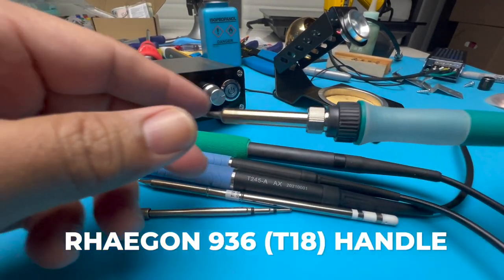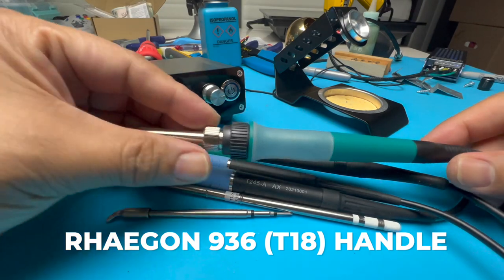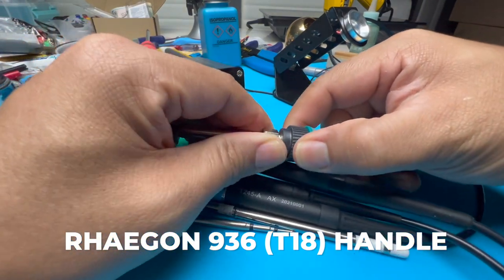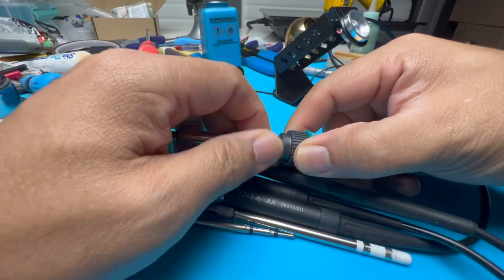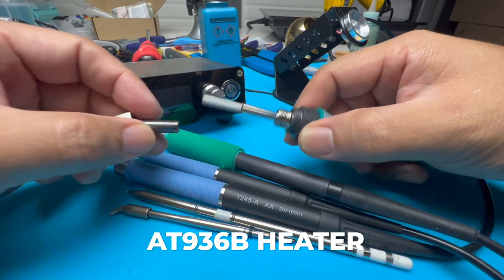For T18 tips, I modified this Raygon handle. Not only will you need to replace the plug, but you will need to replace the heater with an AT936B heater.